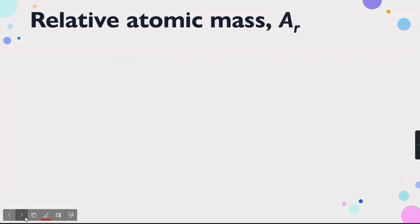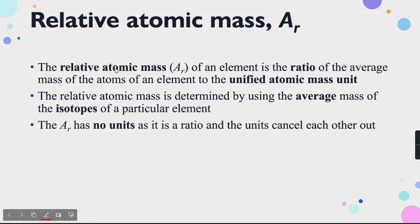Now we'll discuss relative atomic mass, Ar. The relative atomic mass Ar of an element is the ratio of the average mass of the atoms of an element to the unified atomic mass unit. This definition is important for your board or Cambridge examination — it is a one-mark answer. According to the Cambridge syllabus, this is what they ask when they say: define relative atomic mass Ar.